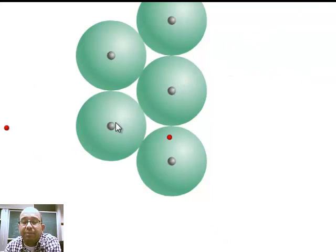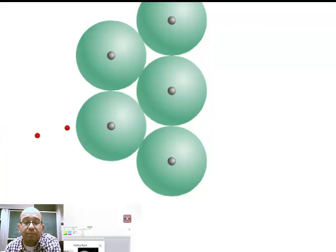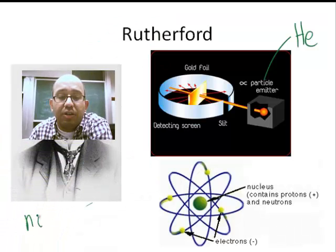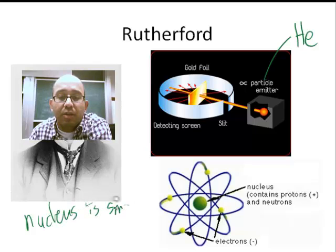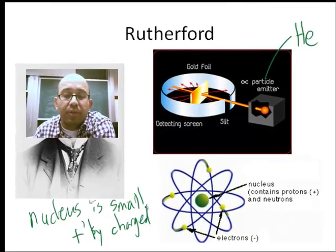it means that there's some strong central core that is the same charge as these particles, so these particles are positively charged, these helium atoms, the helium nuclei. And they bounce off these nuclei, so if they bounce off, this one also has to be positive. But it has to be pretty small, because only some of them are bouncing off. So Rutherford figured out two things. He figured out that the nucleus is small, it's positively charged, and the atom is mostly empty space.